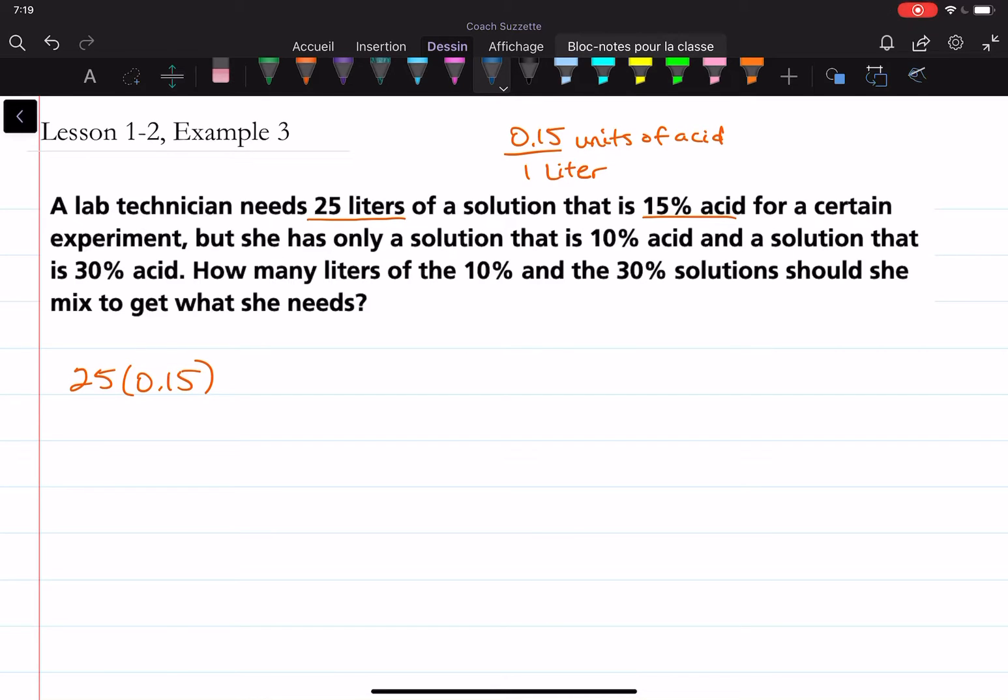But if she only has a solution that is 10% acid and a solution that's 30% acid, and we need to know how many liters of each, the rest of our equation looks like this: X number of liters of the 10% solution, and then the difference between how many she needs and how many we use here—25 minus X number of liters of the 30% solution.